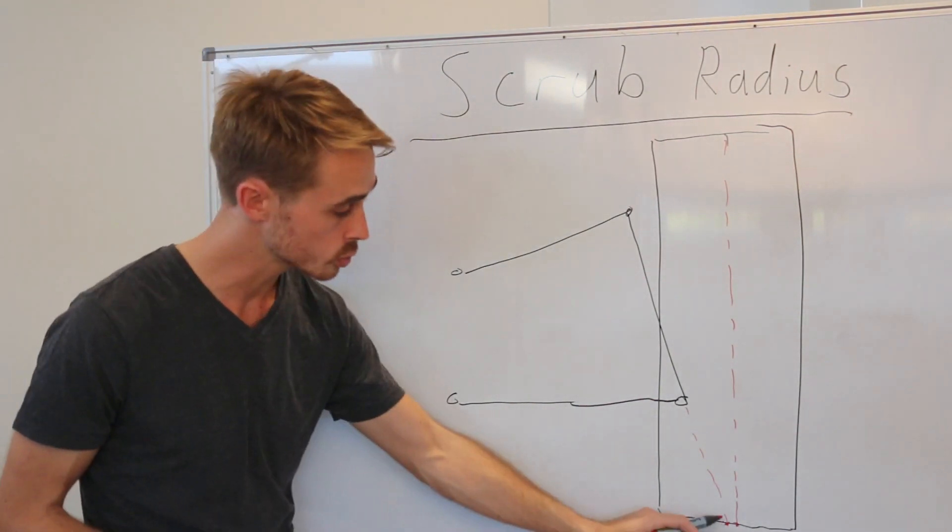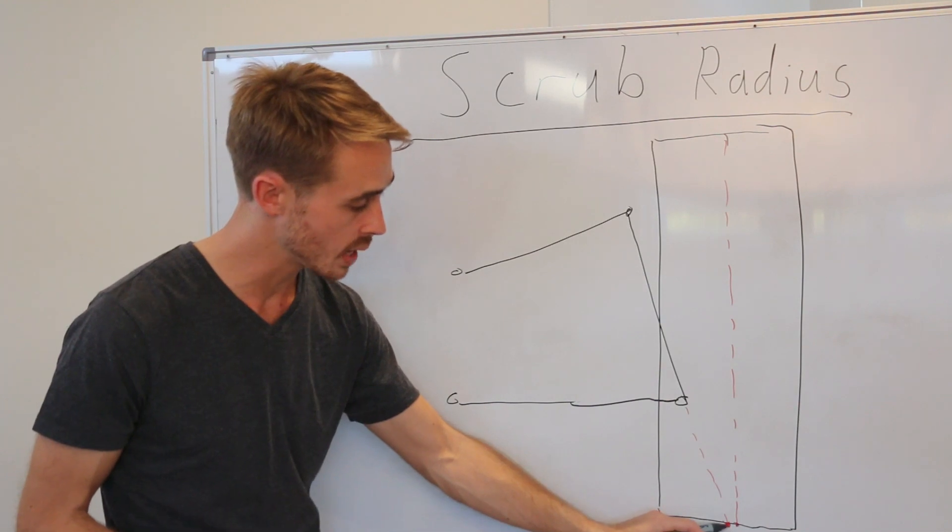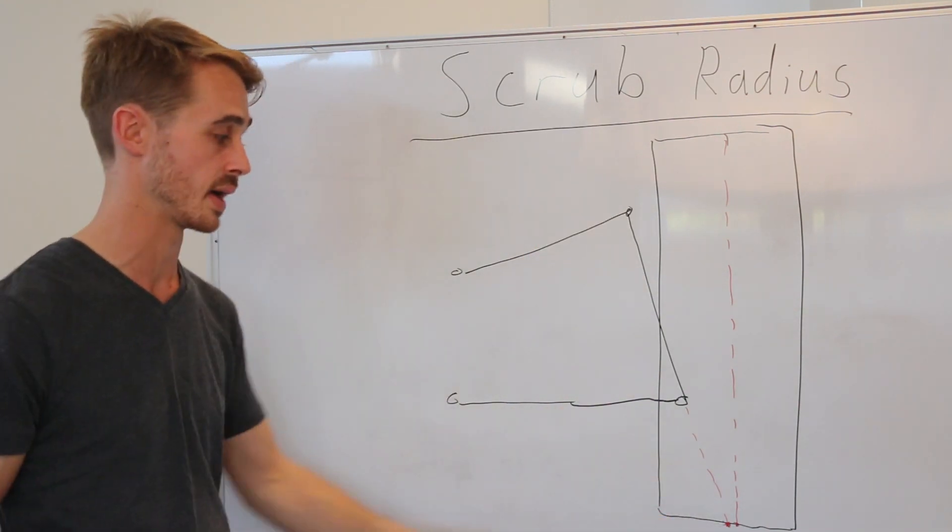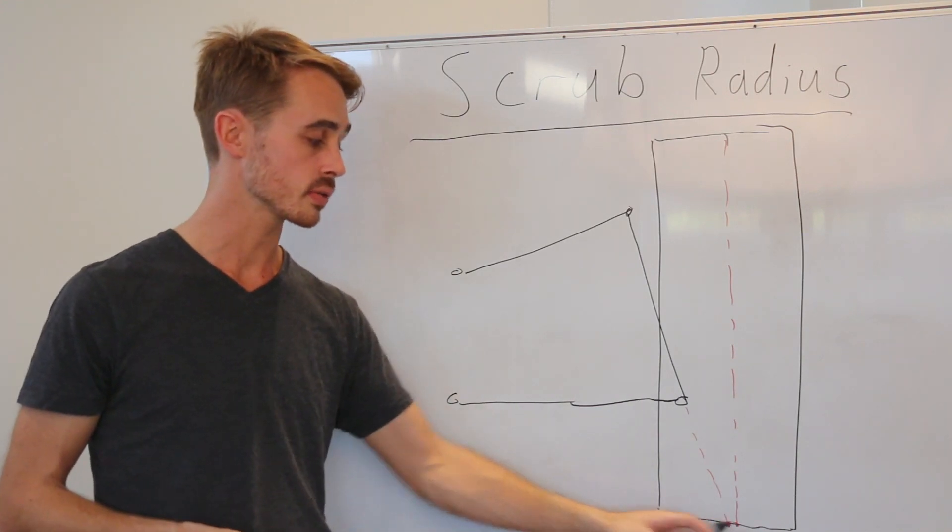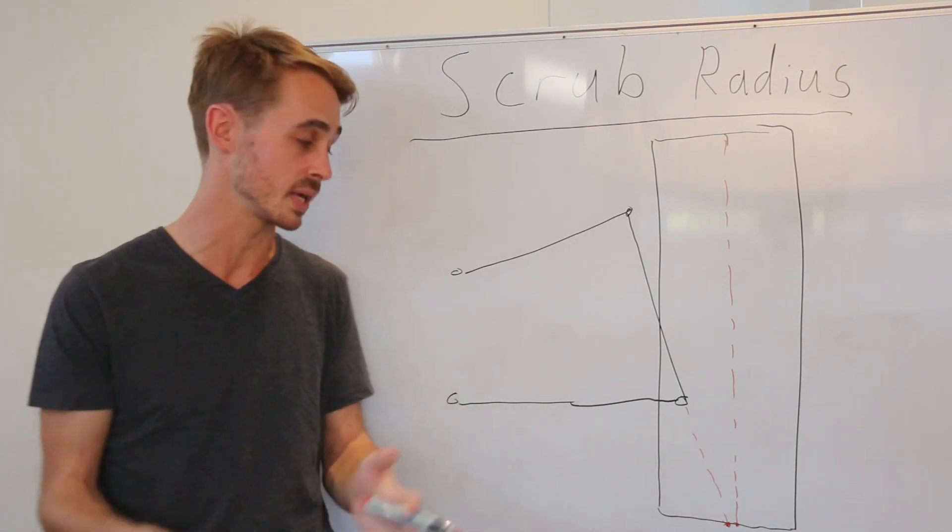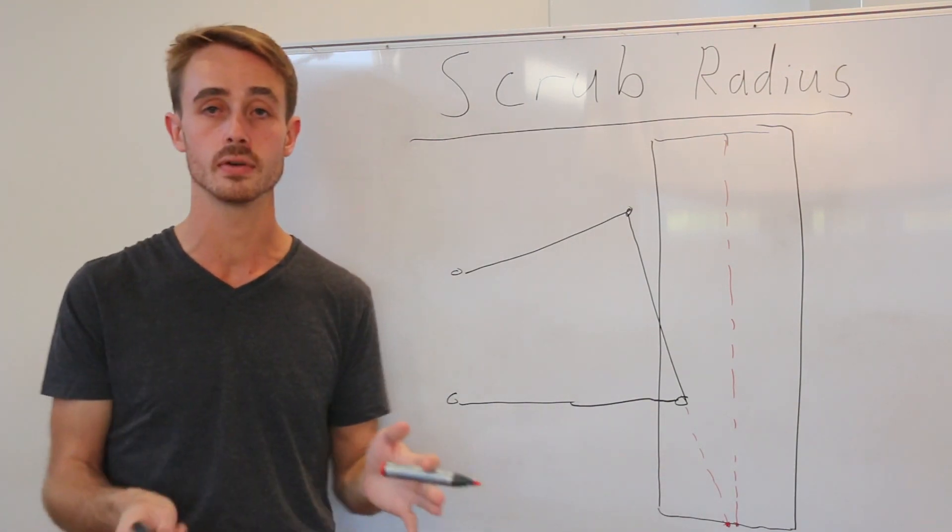Why is it called the scrub radius? Well, it's because this is where the tyre wants to pivot around the ground as a result of the axis you've defined. But the centre of the tyre is offset from that, so the centre of the effective section that the tyre contact patch is grabbing is offset from where you're trying to pivot it around.